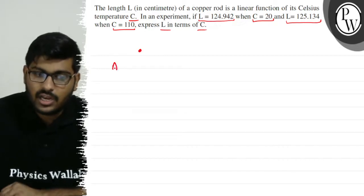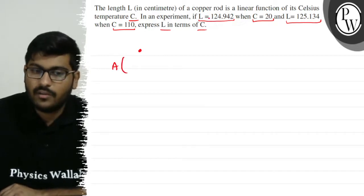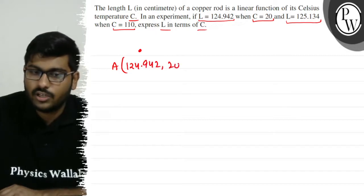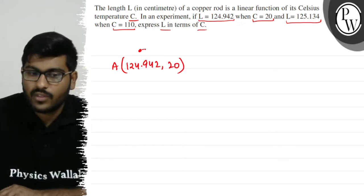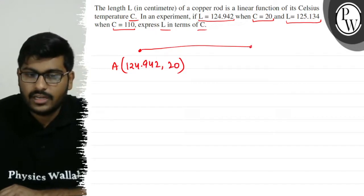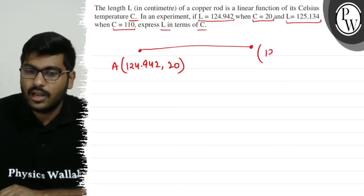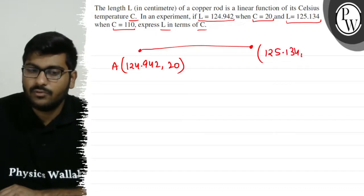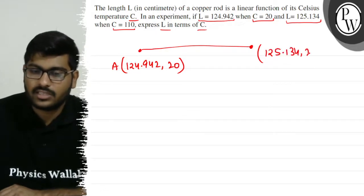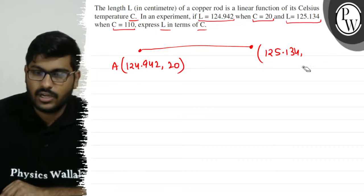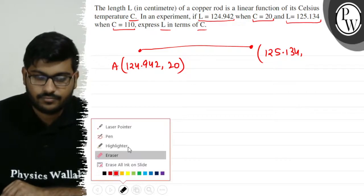We have two coordinates: l is 124.942 when c is 20, and l is 125.134 when c is 110. Since l is a linear function, these represent two points on a line.